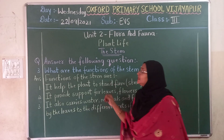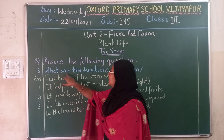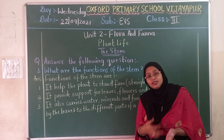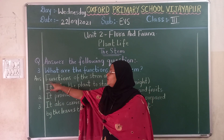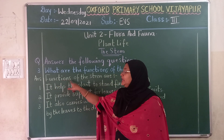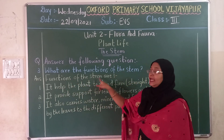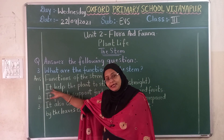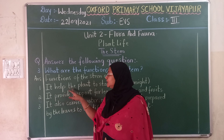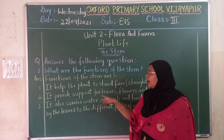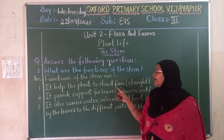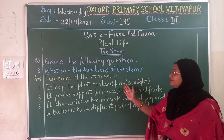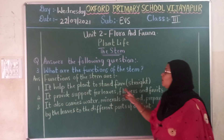See children, I have to write in the book and give you the third question. What is the third question? What are the functions of the stem? Functions: F-U-N-C-T-I-O-N-S of the stem: S-T-E-M, are — first one: it helps the plant to stand firm. H-E-L-P-S the plant P-L-A-N-T to stand S-T-A-N-D firm F-I-R-M. It helps the plant to stand straight or firm.